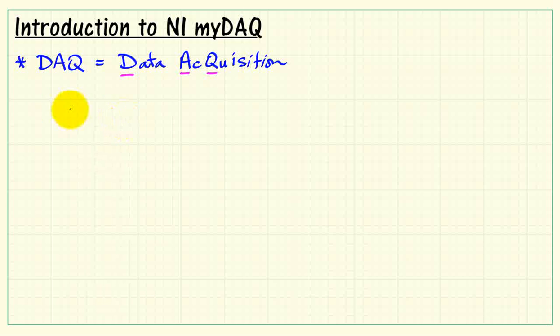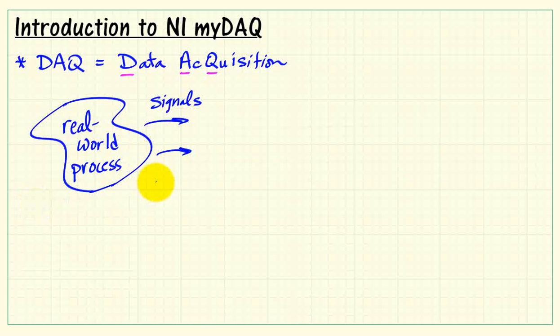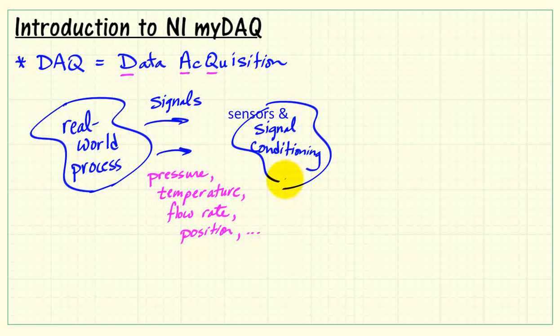As its name suggests, we are accumulating or acquiring data from somewhere. Some kind of real-world process that generates signals of interest. These signals might be physical properties such as pressure, temperature, maybe fluid flow rate, position, and so on. Lots of possibilities there.